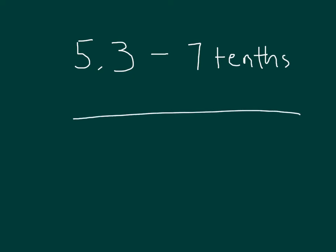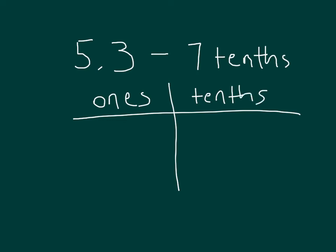We'll go ahead and draw a place value chart with ones and with tenths. First off, we have 5 and 3 tenths and that is what we start with. So we'll go ahead and model the 5 and 3 tenths — 1, 2, 3, 4, 5 in the ones place, and in the tenths place we have 1, 2, and 3.